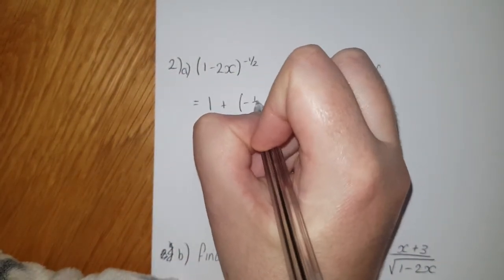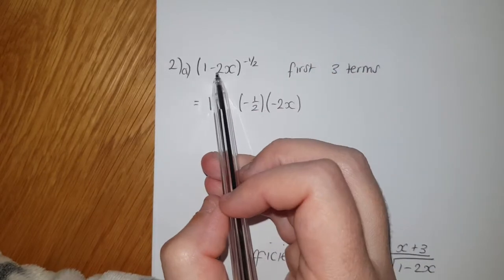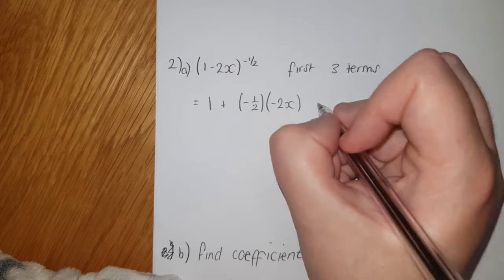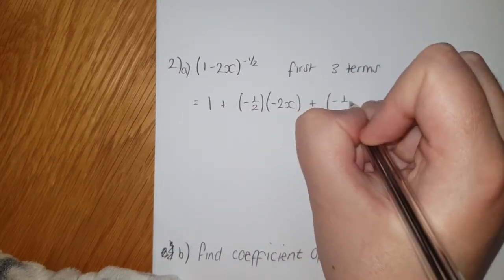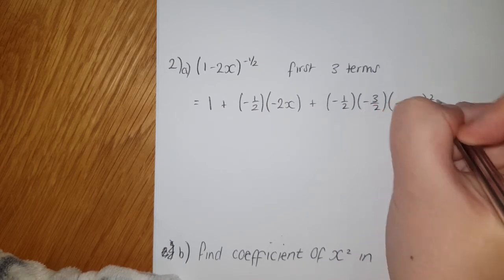Then you get n(n-1), all of your x terms squared over 2 factorial.